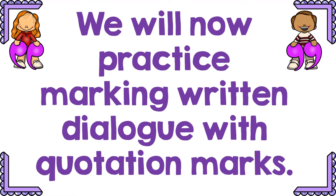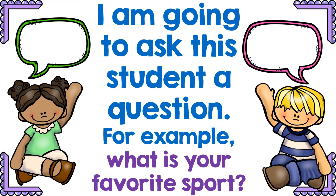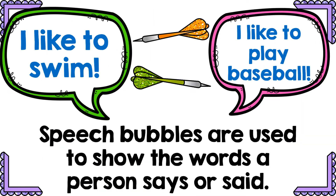We will now practice marking written dialogue with quotation marks. Remember, dialogue is what someone says. I'm going to ask you a question — for example, what's your favorite sport? — and you're going to come up with an answer and put it into a sentence using quotation marks. When something comes out of someone's mouth, that's when we use quotation marks around it. Sometimes we use speech bubbles, like on BrainPOP or in some stories, to show the words a person says. Here, the person would be saying 'I like to swim' or 'I like to play baseball' — that's what the person is actually speaking.